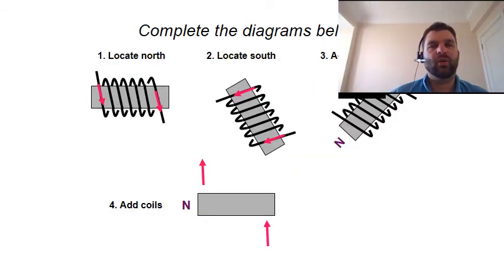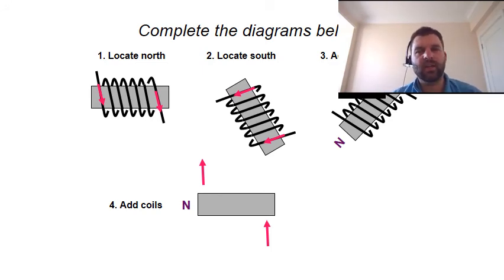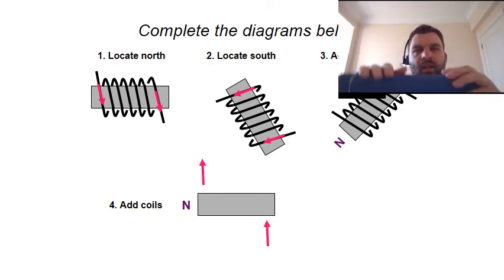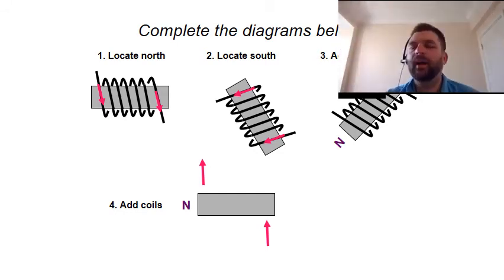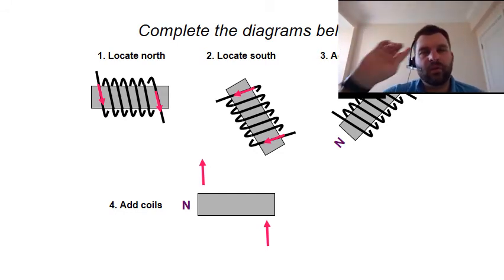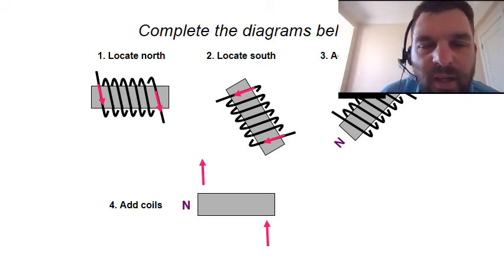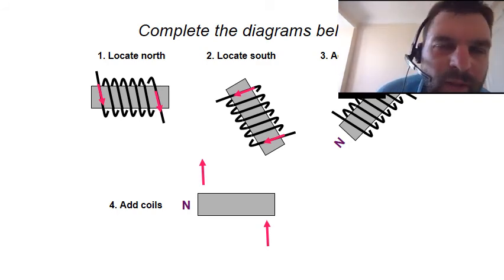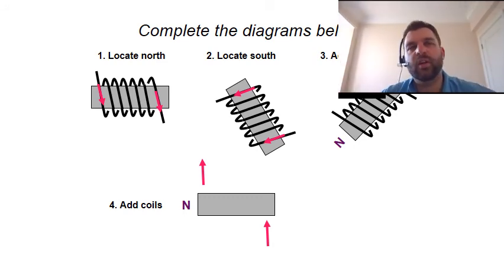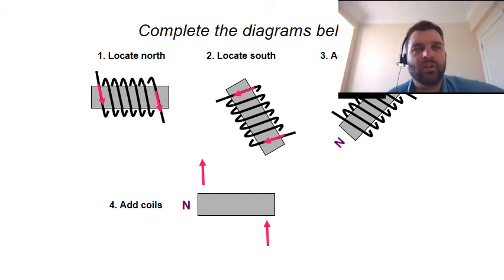On our final slide, we're going to test our understanding of this right-hand grip rule with the prop, and we're going to: first locate the north, then locate the south, add a current direction, and finally add some coils. Pause the video now, see if you can work it out, and then we'll come back and see if we're on the right track.